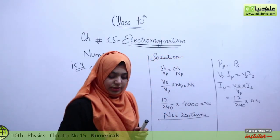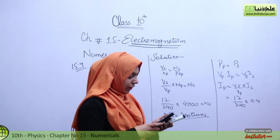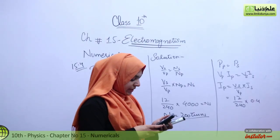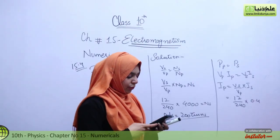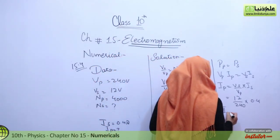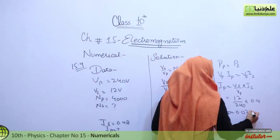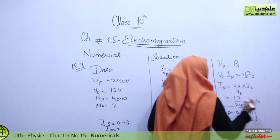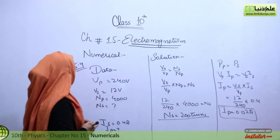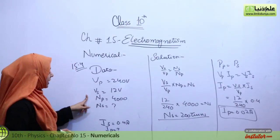Calculating: 12 divided by 240 multiplied by 0.4. IP equals 0.02 ampere. So this was our numerical number 15.4.